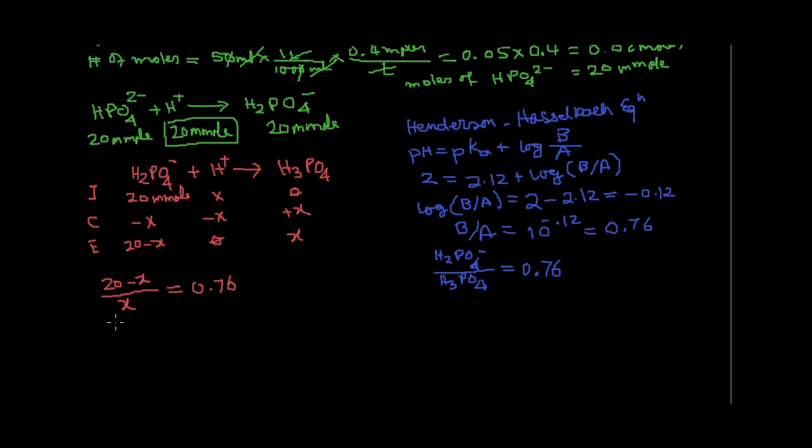So if that be the case, then we can do the cross multiplication. Now it becomes 20 minus x is equal to 0.76x. Or, take x on the other side, so it becomes 20 is equal to 0.76x plus x. This is really 1.76x.